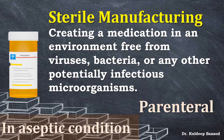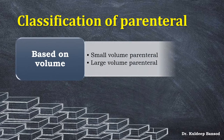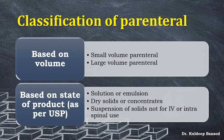Parenterals are classified on two different bases. The first is on the basis of volume: parenterals are classified into two types — small volume parenteral and large volume parenteral. As per USP, parenterals are also classified on the state of product, like solution or emulsion, dry solids or concentrates, and suspension of solids not for intravenous or intraspinal use.